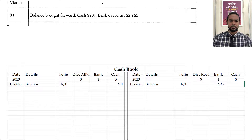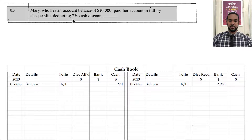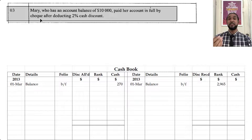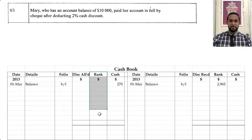On the third, it says Mary, who has an account balance of $10,000, paid her account in full by check after deducting 2% cash discount. We are Walter — Mary owes us $10,000 and she's paying her account in full by check, which means our bank is going to increase. If somebody is paying us, we are getting money, so our bank account is going up. To record an increase in an asset, you're going to debit bank. So on the debit side under the bank column we're going to put the receipt from Mary — but how much?